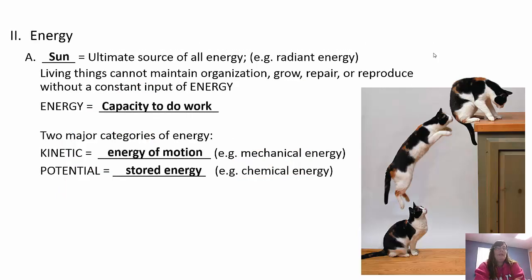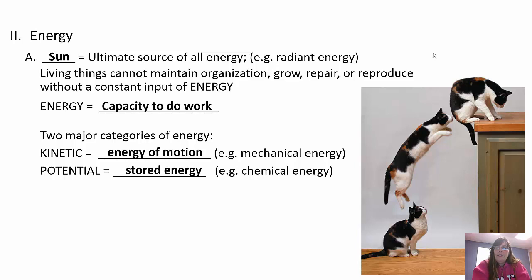Now, energy. The sun is the ultimate source of energy. Without it, living things cannot survive - we have to maintain organization, grow, repair, and reproduce, and we need that constant input of energy. Energy is just the capacity to do work. Photosynthesizers turn solar energy into chemical energy that heterotrophs can't make for themselves. We have two major categories: kinetic energy is the energy of motion, and potential energy is stored energy. A cat has potential energy when sitting and transforms it to kinetic energy when it jumps up to a counter.